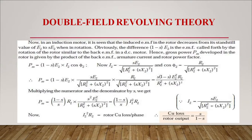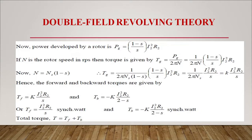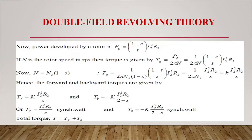The rotor copper loss per phase gives rotor output = s/(1-s). Power developed by rotor PG = (1-s)/s × I2²R2. Torque Tg = PG/(2πn) = (1/2πn) × (1-s)/s × I2²R2. Since n = Ns(1-s), this simplifies to Tg = k × I2²R2/s. Therefore, forward torque Tf = k × I2²R2/s and backward torque Tb = -k × I2²R2/(2-s) in synchronous watts. Total torque T = Tf + Tb.